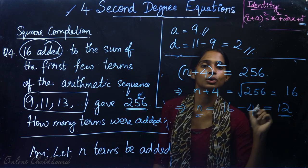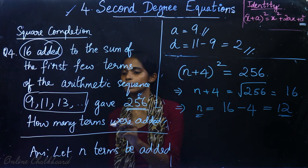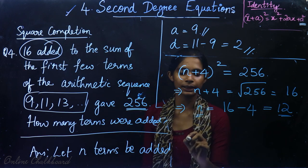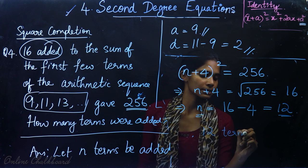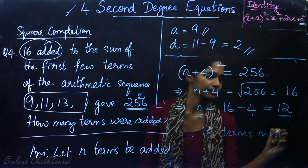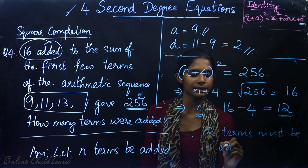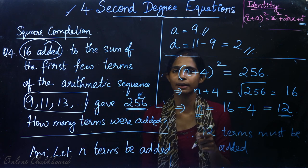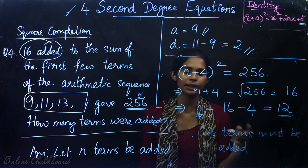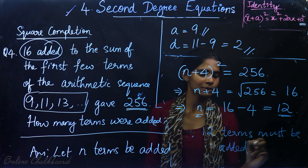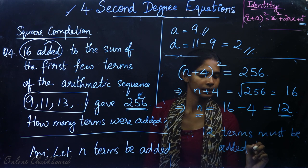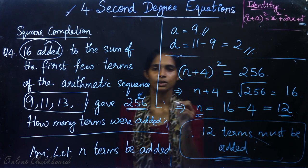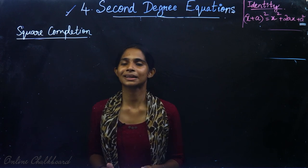So n is 12. How many terms should be added? We can say 12 terms must be added. When 12 terms are added and 16 is added, we get 256. That is your answer.